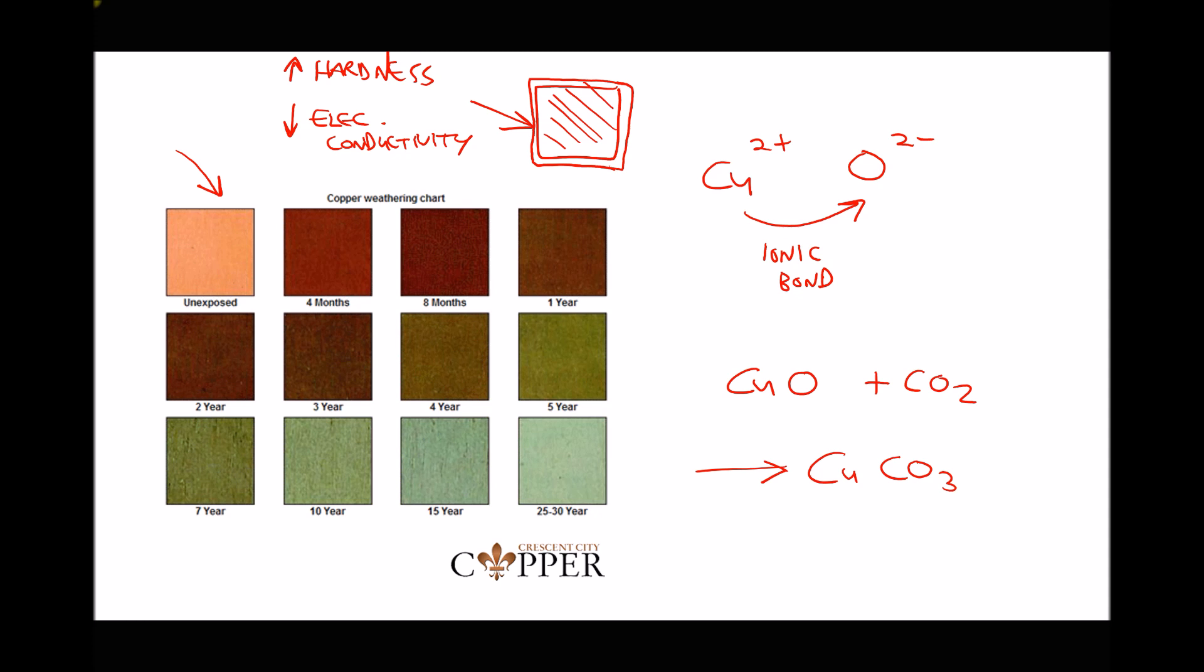There is one big advantage of this process. What this actually does is protect the copper. Once we have this carbonate layer, no further corrosion will take place. The soft copper core will be contained in the center and we have a corrosion-resistant skin on the outside of the copper.